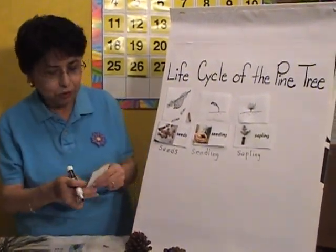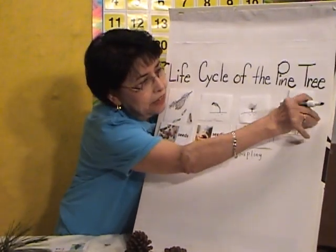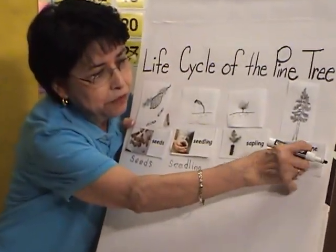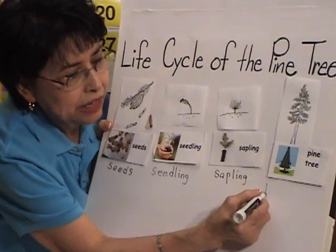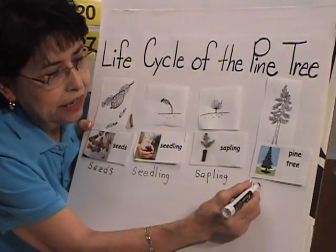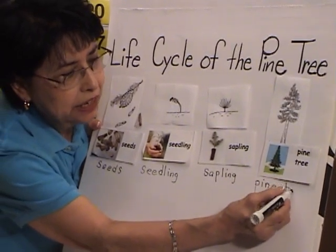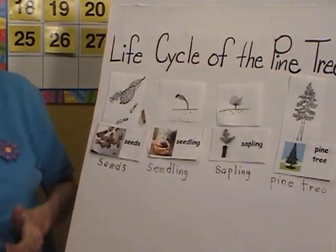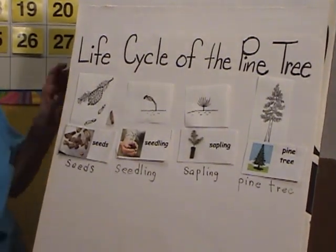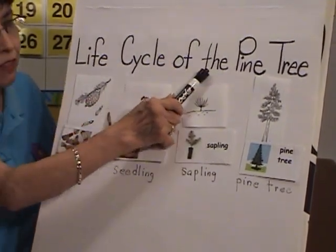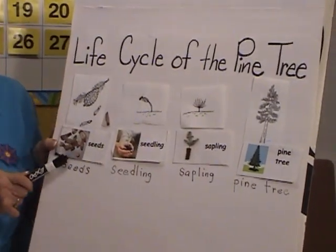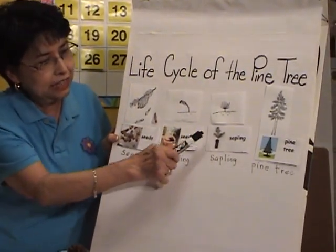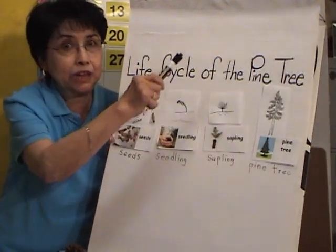Every little connection is expanding. And now, finally, what do we have? Our pine tree. Here's our pine tree. Let's find our vocabulary word for pine tree and spell it: P-I-N-E, T-R-E-E. Here is the life cycle of our pine tree. First, we start with the seed that came out of the pine cone, from the seed to the seedling, from the seedling to the sapling, and then finally we have a big, big tree.